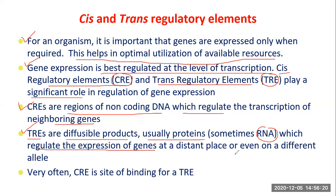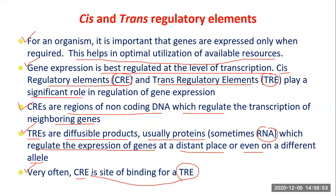Genes regulated by trans elements can be located next to the site, at a distant place, or even on a different molecule or different allele. Irrespective of distance, those genes will be regulated because the effect of a TRE is mediated through a diffusible product. Very often, a CIS regulatory element is the site of binding for a trans regulatory element.